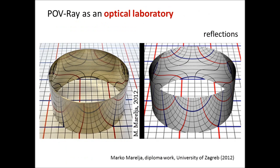POV-Ray is an optical laboratory — it contains the physics of at least geometrical optics, and more. Some elements of physical optics are in there too. You can easily code complicated lenses, complicated mirrors, or even the propagation of light through a physical region of varying index of refraction. Whatever you can imagine in geometrical or physical optics, you can most likely code it with POV-Ray. I supervised several diploma works where students investigated elements of geometrical optics with POV-Ray.